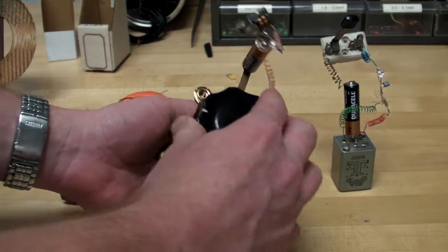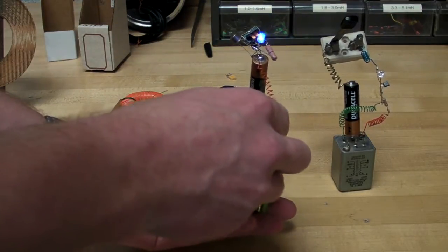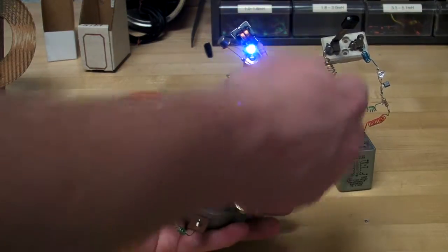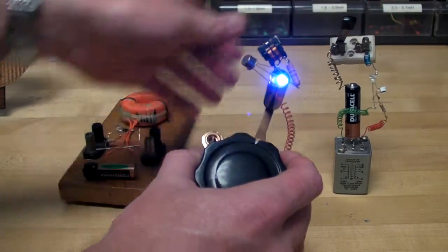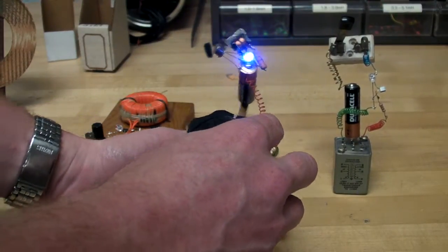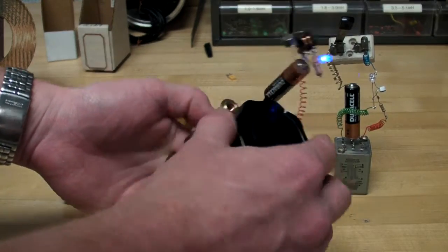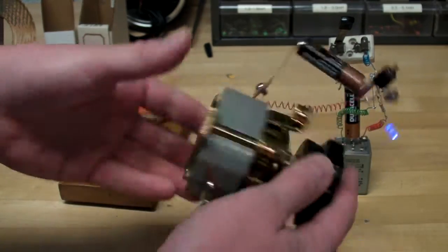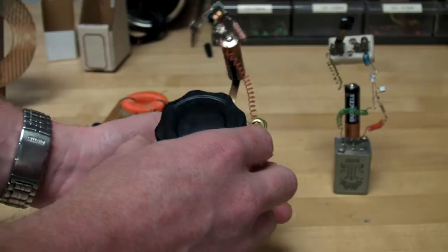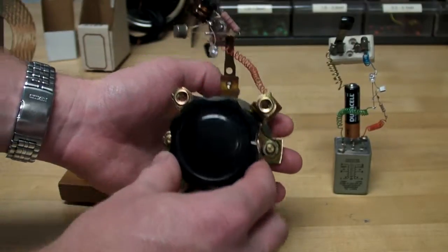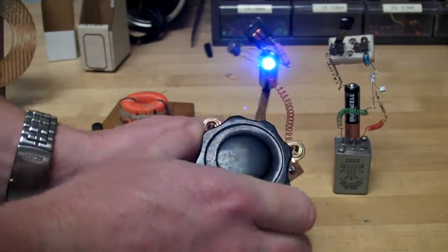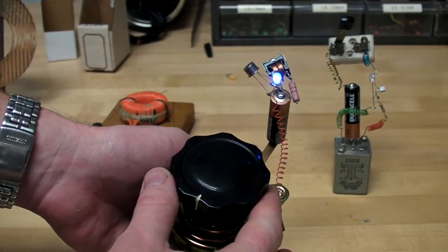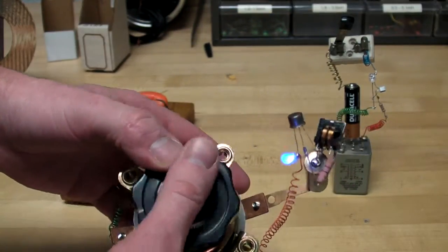This other one is just, I was following my idea where I put a really big switch on one of my Joule Thieves. Well, how about I put an even bigger switch on another Joule Thief? So this is just a really big 60s vintage, probably, rotary switch rated for 500 volts and 30 amps. And it's just a regular Joule Thief circuit on there.